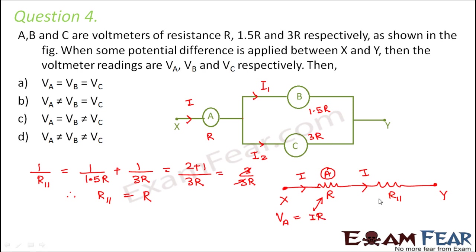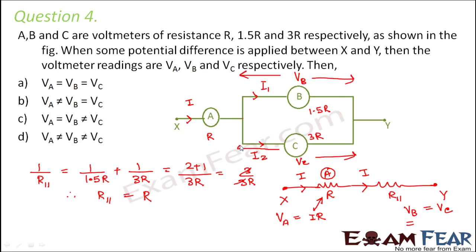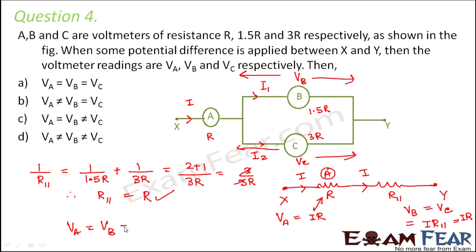Now what would be the potential across R_parallel? The potential across B and the potential across C would be the same because B and C are in parallel. So VB equals VC. The value of potential across B and C would be I into R_parallel. And since R_parallel equals R, this will also equal I into R. So basically VA equals VB equals VC.